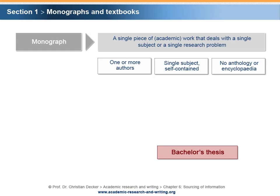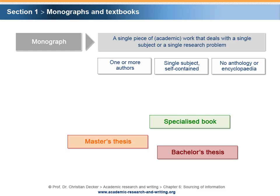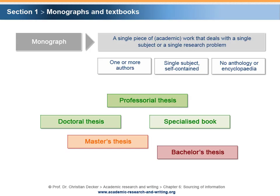Examples of academic monographs include a bachelor's thesis, a master's thesis, a specialized book, a doctoral thesis, and a professorial thesis. A professorial thesis has the highest quality and credibility. In contrast, a bachelor's thesis has the lowest academic standing. It should be noted that due to quality uncertainty, one should selectively use master's theses and bachelor's theses as information sources in a student research project.